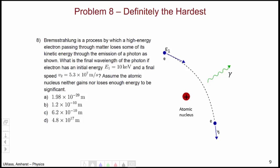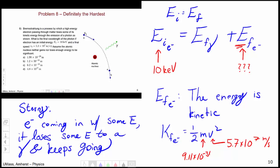Problem number 8 was, in my opinion, the hardest problem on the exam. And we discussed this in class in some detail on the first day of unit 3. The basic story was that we had an incoming electron with some amount of energy, and it loses some of that energy to a photon as it continues to go. So our initial energy is 10 keV. We don't know what the final energy of the electron is, and we're looking for the final energy of the photon.